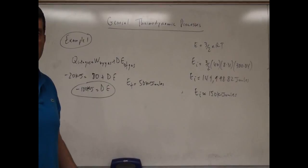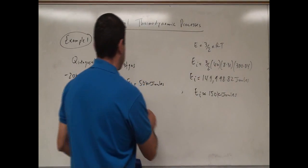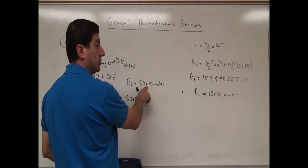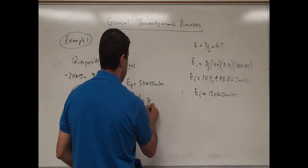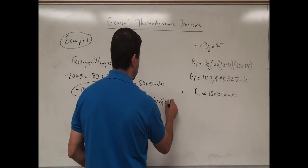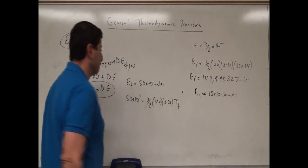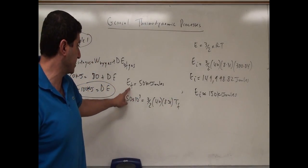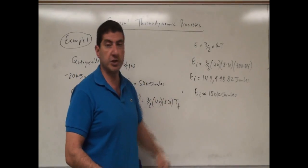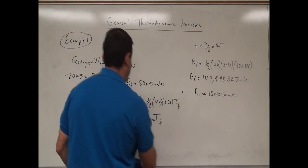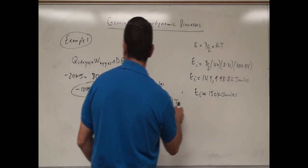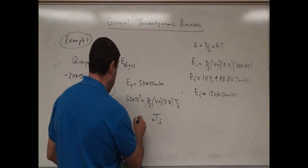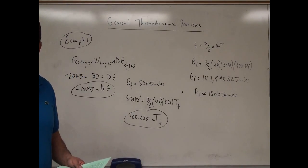Now we can solve for the final temperature. We write: 50 × 10³ = (3/2) × 40 × 8.31 × T_final. The final temperature is one-third of the initial temperature, because the final energy is one-third of the initial energy. So T_final = 300.84 ÷ 3 = 100.28 Kelvin.